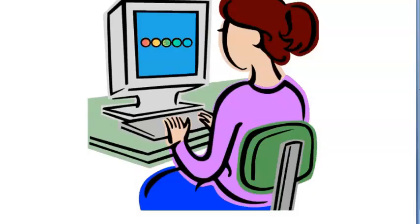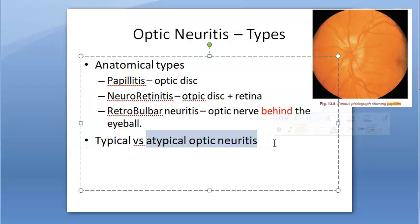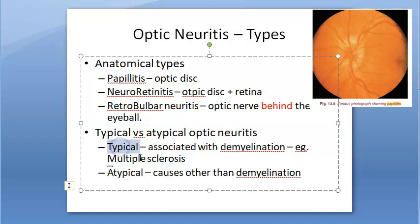There is also the terminology of typical versus atypical optic neuritis. Traditionally, typical optic neuritis refers to the one associated with demyelination — particularly multiple sclerosis. Atypical optic neuritis is not associated with demyelination. So for multiple sclerosis, you write typical optic neuritis.